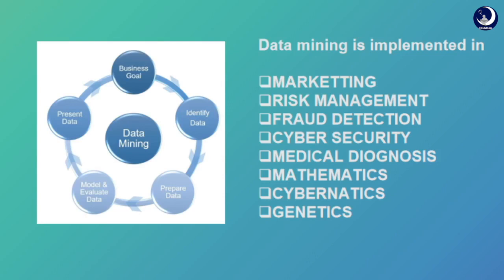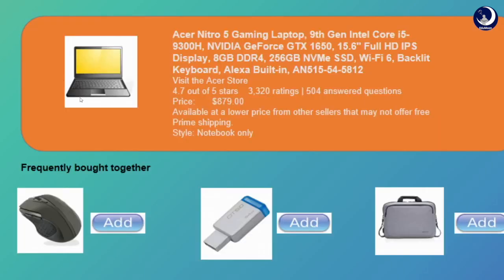Let us take the previous example — Amazon. Suppose you added a laptop to your cart. As soon as you add this laptop, it automatically suggests you buy a mouse, a pen drive, or a laptop cover. Why is it suggesting these? Because most people who bought a laptop must have also bought these items along with it. Here it is trying to find some sort of useful pattern, and this process of finding patterns is nothing but data mining. This is the main reason why e-commerce is booming nowadays.